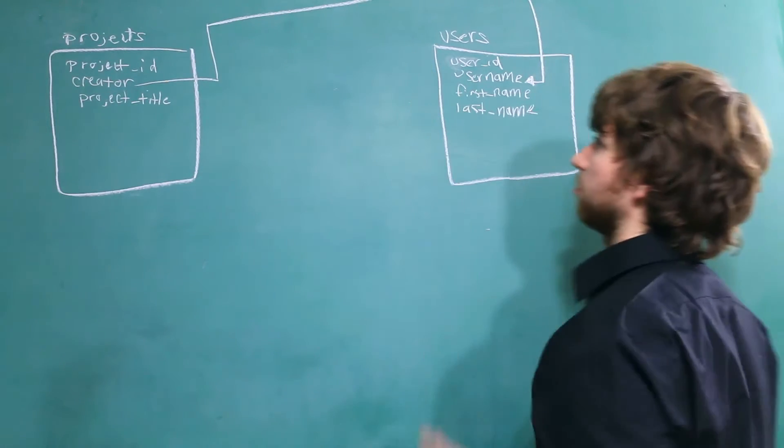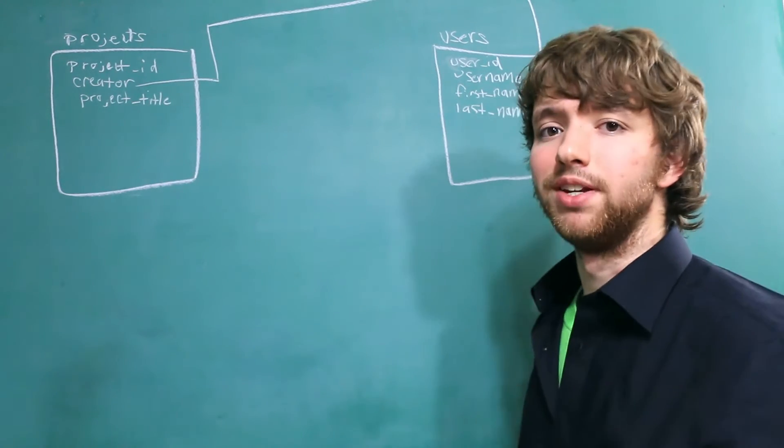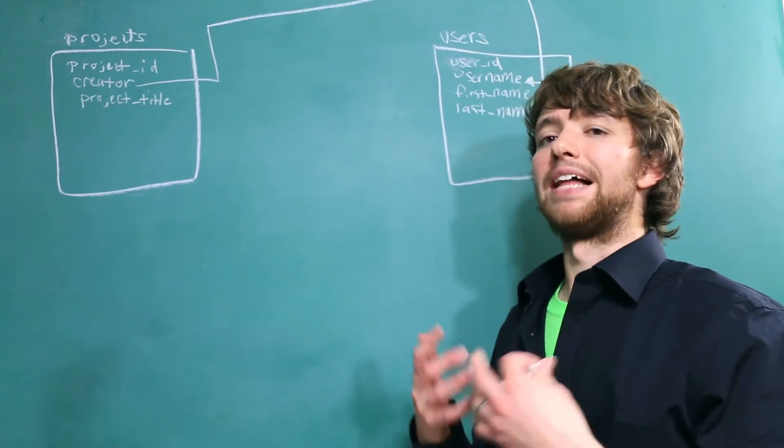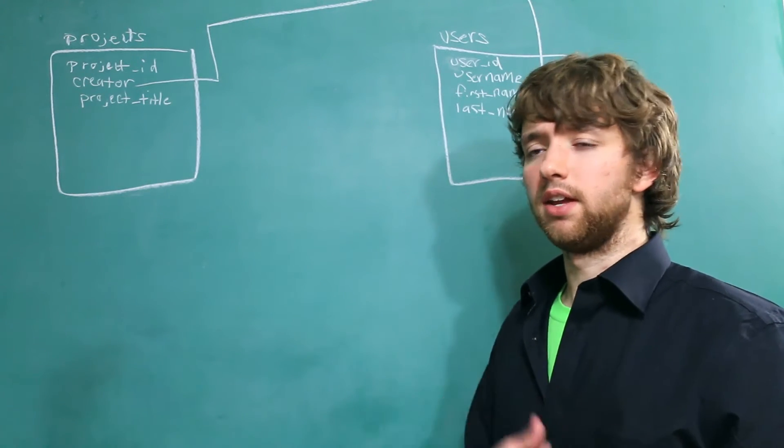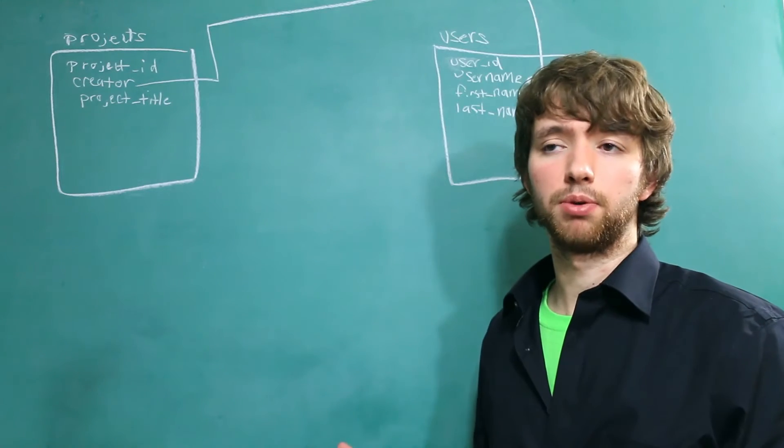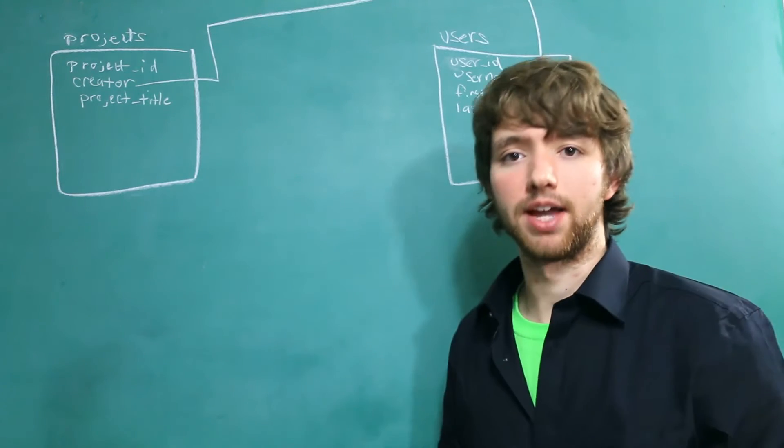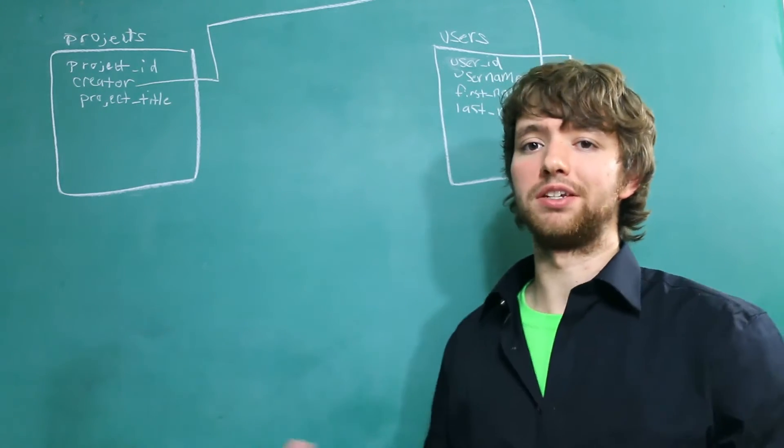Now, what about this table? Well, the only other table we need is a table that lists what users are part of what projects. And that is a many-to-many relationship. That's because we designed it that way. A lot of the stuff you get to choose.